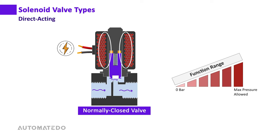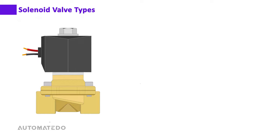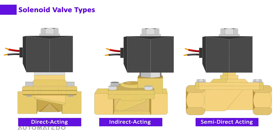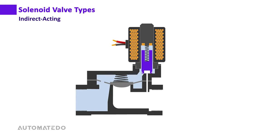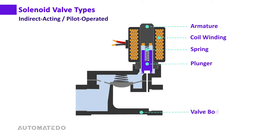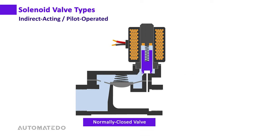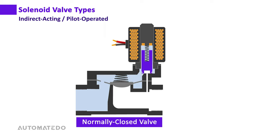Now let's look at the indirect acting solenoid valve, also known as a servo or pilot operated solenoid valve. Its main components are the coil winding, armature, spring, plunger, valve body, pilot orifice, and diaphragm. Consider a normally closed valve: two chambers are separated by a diaphragm, and there is a pinhole in the diaphragm.